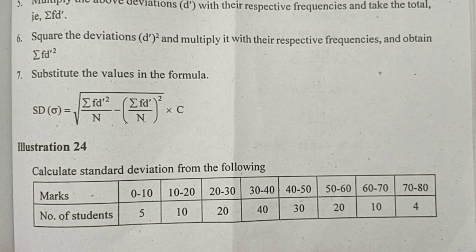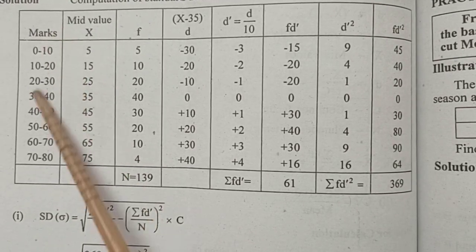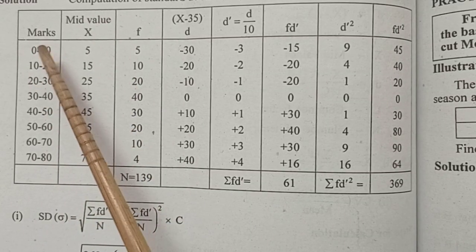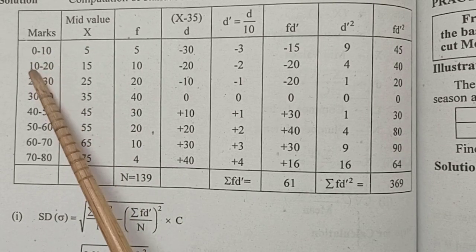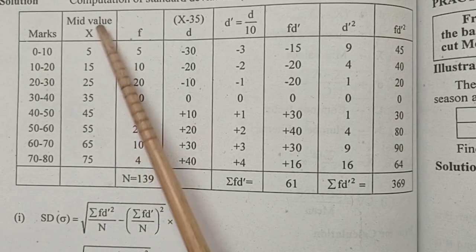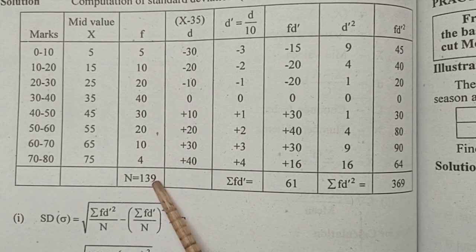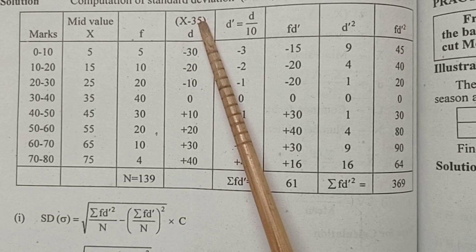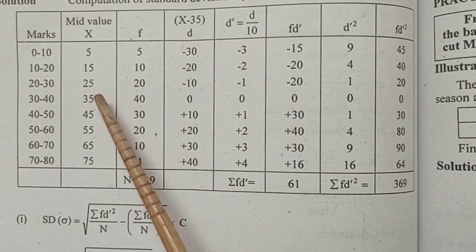For continuous series, first find the mid values. For 0 to 10: mid x equals (0 plus 10) divided by 2 equals 5. For 10 to 20: mid x equals (10 plus 20) divided by 2 equals 15. The minimum value leads to a sum of 139. We assume a value: x minus 35, with assumed mean at mid value 35.